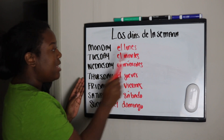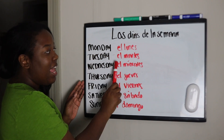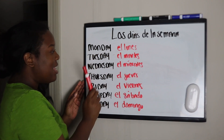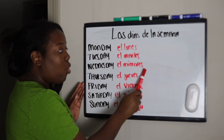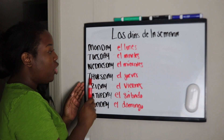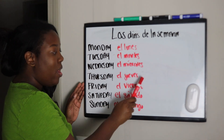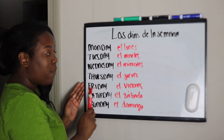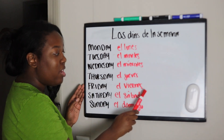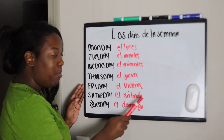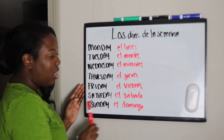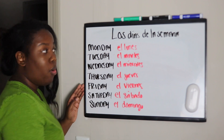So for Monday we got el lunes, Tuesday — el martes, Wednesday — el miércoles, Thursday — el jueves, Friday — el viernes, Saturday — el sábado, Sunday — el domingo.